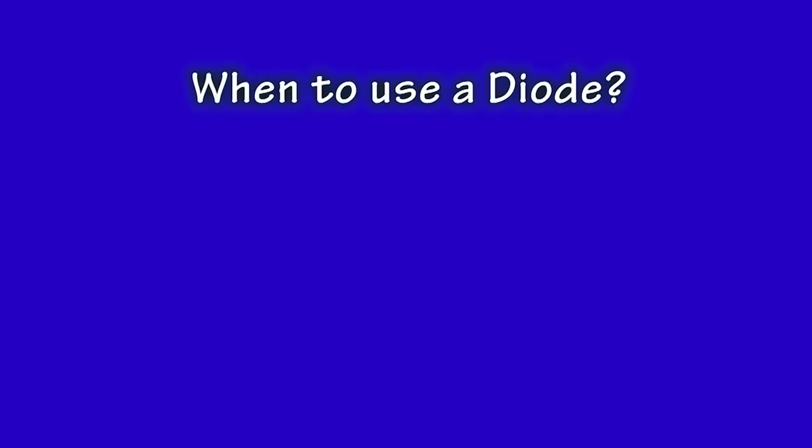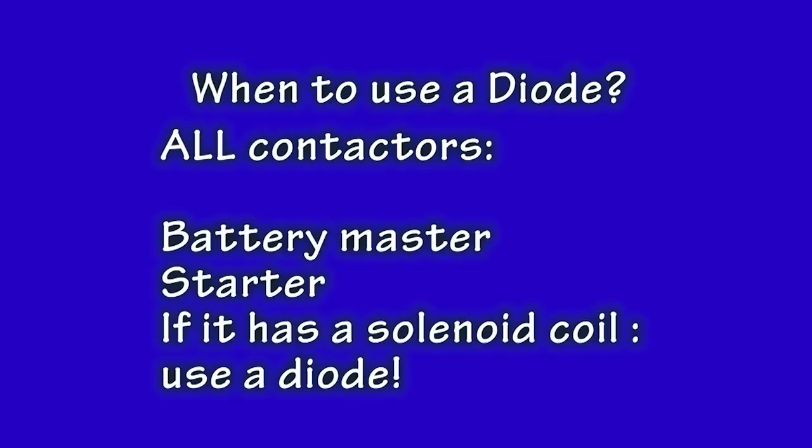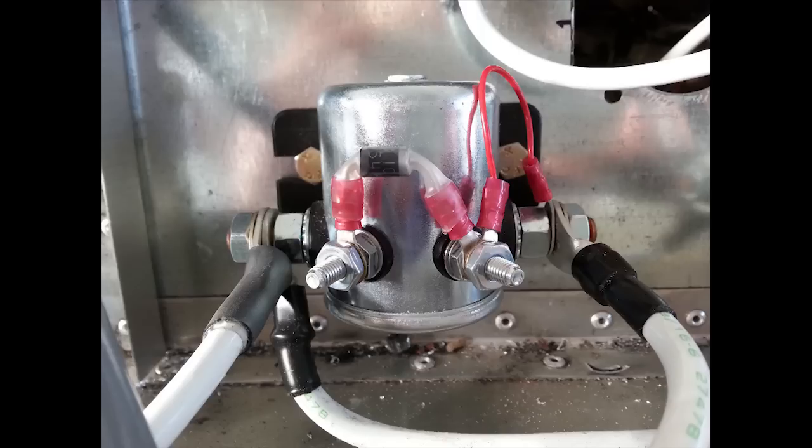To summarize, from our Department of Sweeping Generalizations, when using any contactor, whether it is a battery contactor or a starter contactor, any time a coil is involved, use a diode wired across the coil.